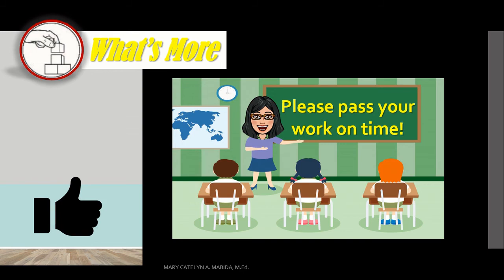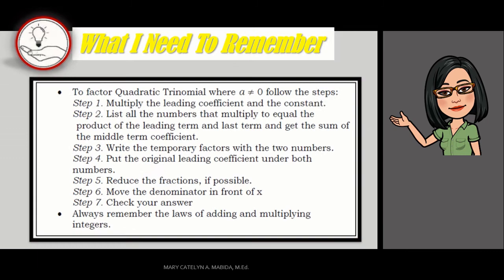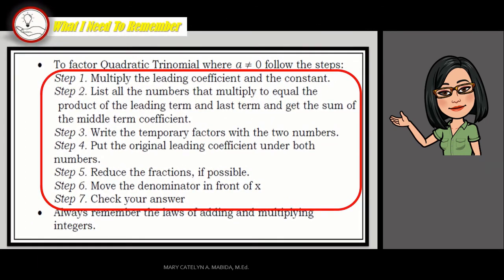Thumbs up, good job. Now here is what you need to remember. To factor quadratic trinomial where A is not equal to 1, follow the steps. Step 1: Multiply the leading coefficient and the constant. Step 2: List all the numbers that multiply to equal the product of the leading term and last term, then get the sum of the middle term coefficient. Step 3: Write the temporary factors with the two numbers.